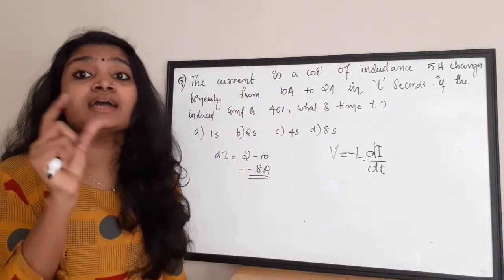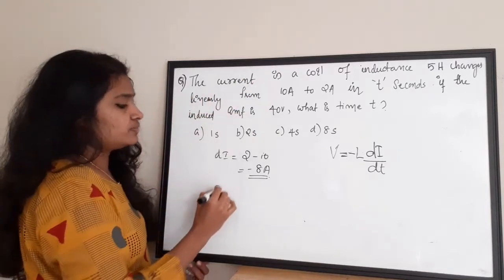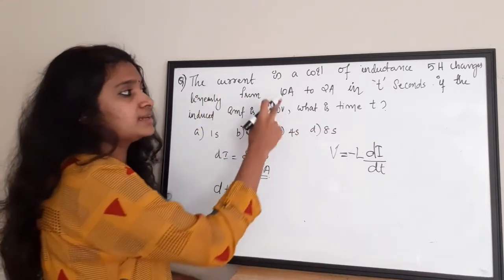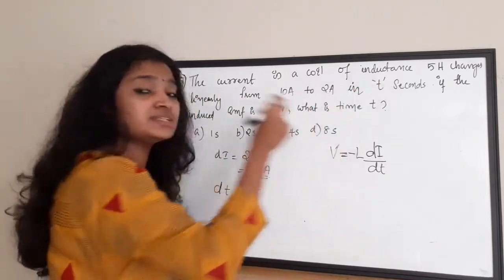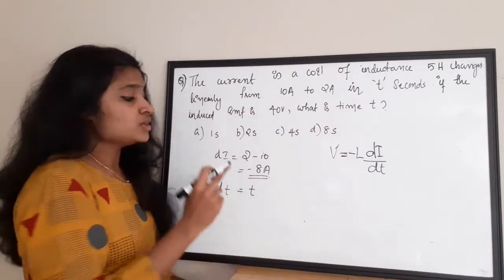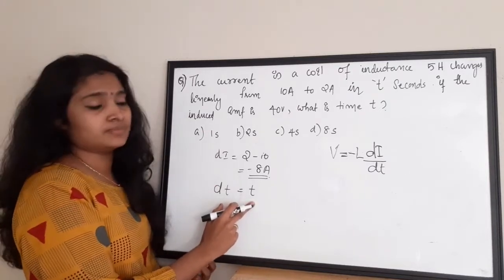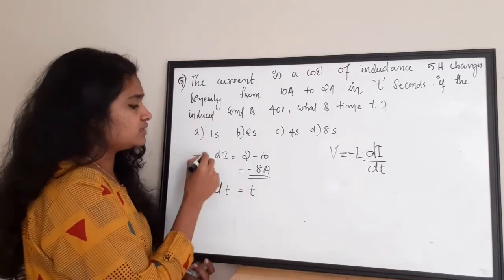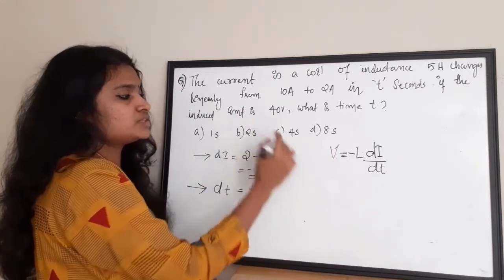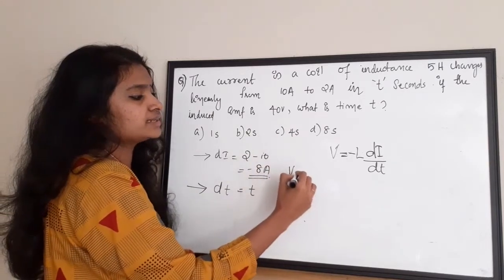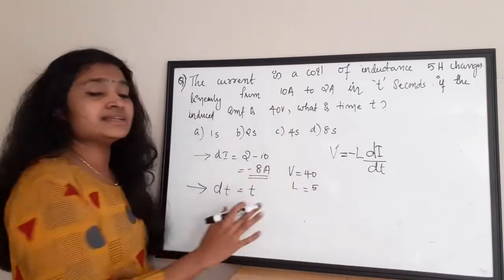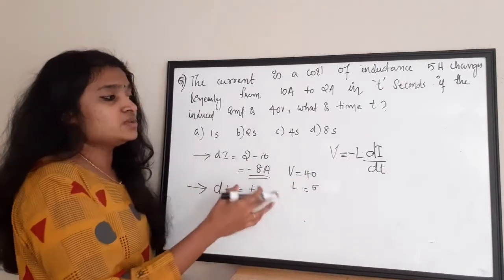The current is changing in T seconds, so the dT value is T. We have obtained the value of dI and dT. The induced EMF V is directly given as 40 volt and L is given as 5 henry. So all the details are available from the question — let us substitute the values into the equation and find the result.